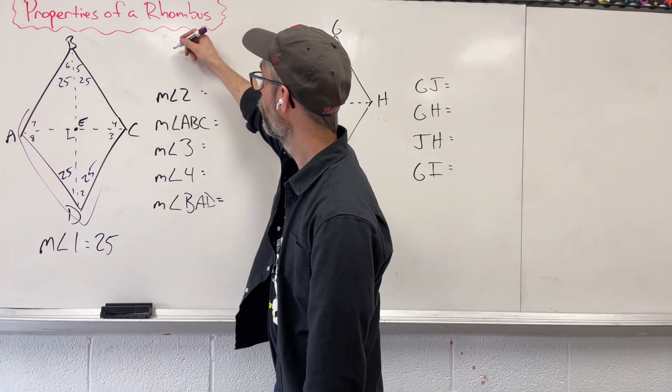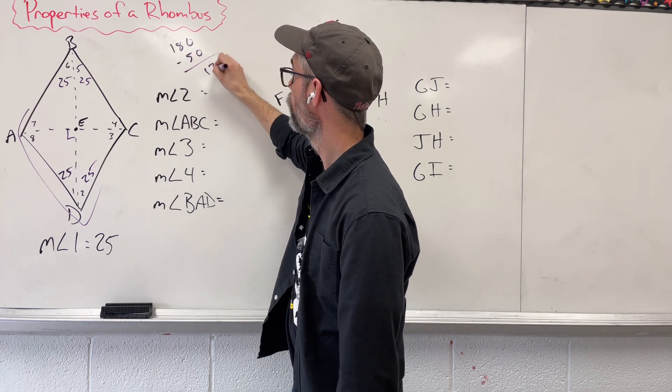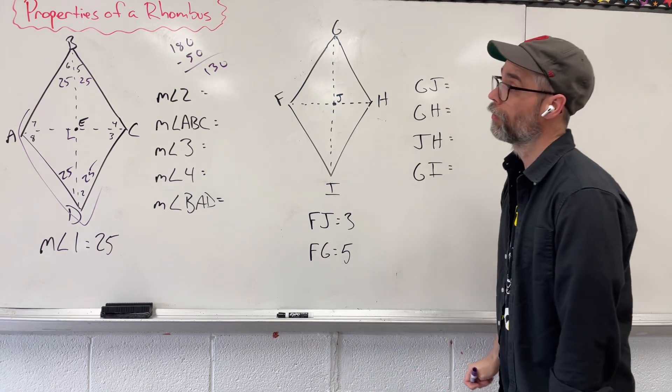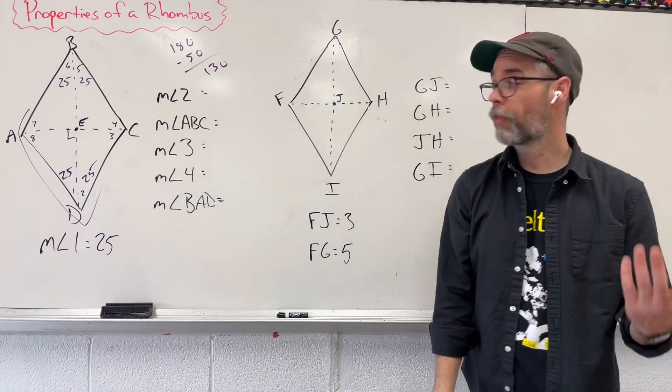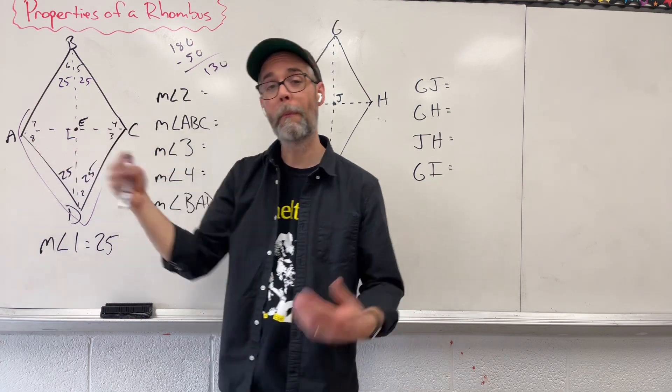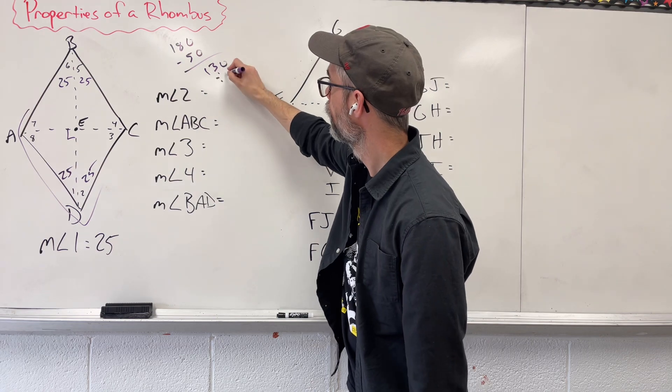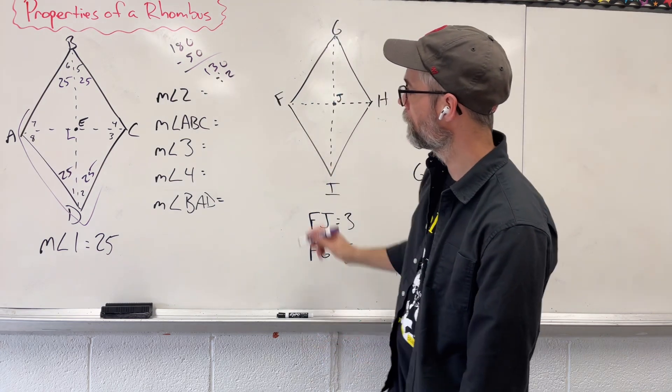I already have 50. So if I'm looking at 180 minus 50, I'm left with 130. That 130 has to get split evenly because this diagonal bisects that angle. So what is half of 130 divided by 2? We're going to say 65.